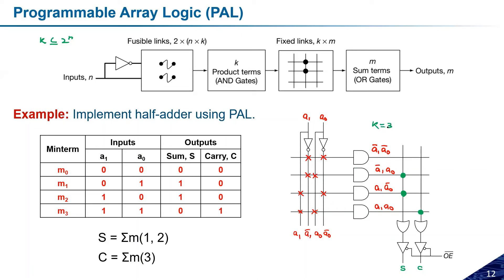So k = 3 in this case. The unused AND gate is not needed and can be deleted. If anyone has doubts, ask now; otherwise we can move ahead to the next type.